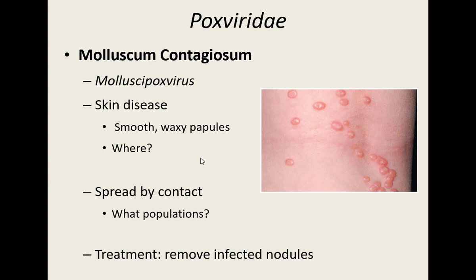The other pox virus still affecting humans is molluscum contagiosum. It is definitely not severe and not deadly — more of an inconvenience. The official name is Mollusca poxvirus, and it causes a skin disease with smooth, waxy, almost shiny papules on the skin. Where they show up is anywhere you itch. If you get that virus on your hand by touching someone else's infected skin, anywhere you then scratch, you're exposing that virus to your body.